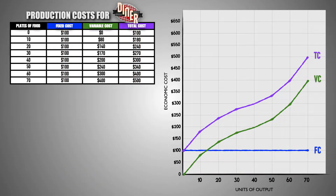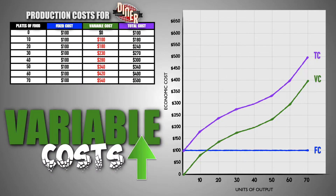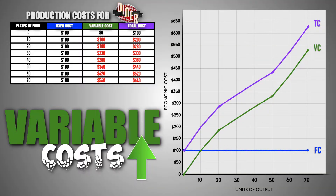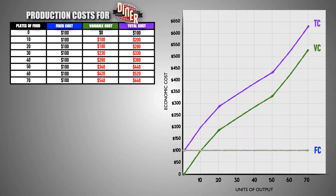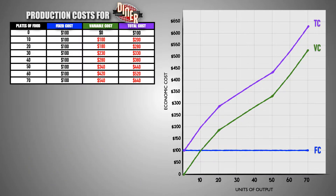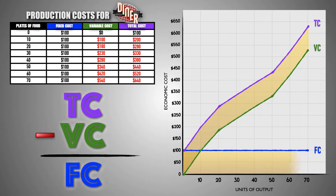How about changes in variable costs? Assume that the diner's variable production costs increase. An increase in variable costs will cause the total cost of production to rise for the diner at every output level. We can visualize this change in production costs by plotting the diner's new variable and total costs at each level of output and connecting these points with a curve. Essentially, the increase in variable costs is represented by a shift upward in the variable cost and total cost curves. Notice that the fixed cost curve did not shift. Remember that, ceteris paribus, fixed costs remain constant regardless of how many meals the diner serves. A change in variable cost only impacts the variable cost curve and total cost curve. Also notice the space between the variable cost curve and the total cost curve is still equal to the sum of fixed costs for the diner.